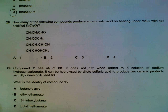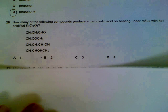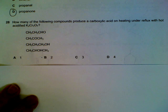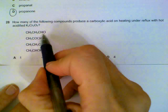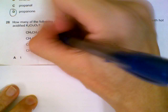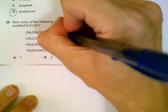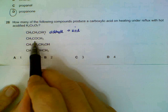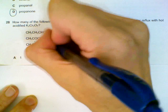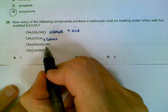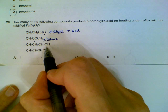Next: which compounds give a carboxylic acid when heated with dichromate? You need to recognize the functional groups. One compound is an aldehyde — it will be oxidized to an acid. Another is a ketone, so it will not be oxidized to an acid. Another is a primary alcohol.